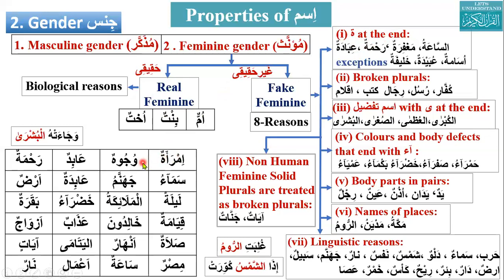Wujuh — is it treated as feminine? Student says because of ta, but the teacher clarifies there is no ta, that is ha. Wujuh is the broken plural of wajh (one face), so wujuh (faces) is a broken plural. That is why it is feminine gender — fake feminine.